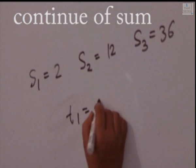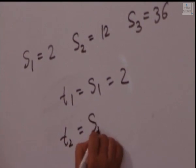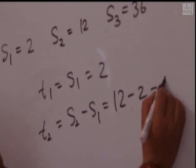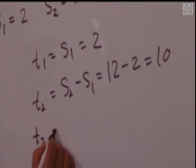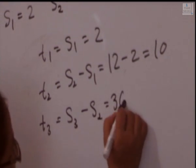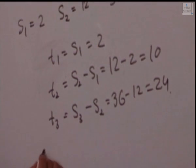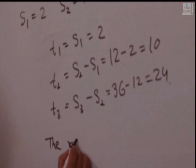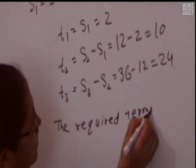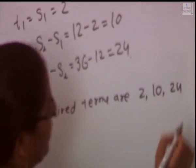T1 equal to S1 equal to 2. T2 equal to S2 minus S1: 12 minus 2 equal to 10. T3 equal to S3 minus S2: 36 minus 12 equal to 24. The required terms are T1 equal to 2, T2 equal to 10, and T3 equal to 24.